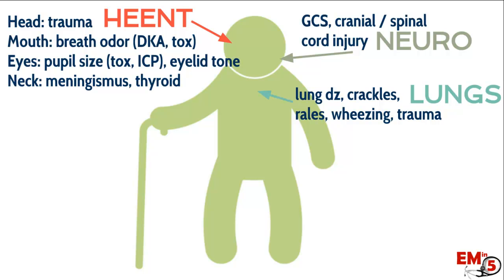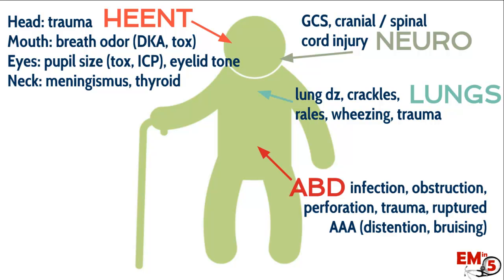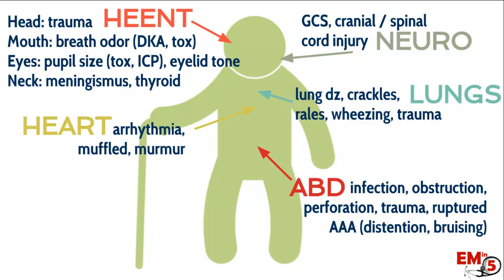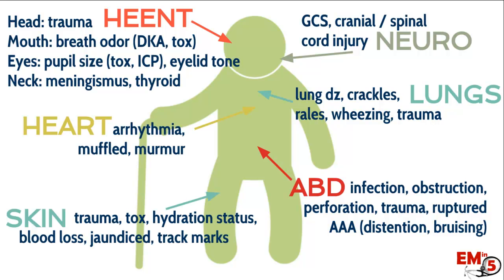The lungs can give good clues into past medical history — maybe they have crackles, wheezing, or a barrel chest of emphysema. In the abdomen, look for signs of infection, obstruction, perforation, or trauma; distension and bruising could indicate a ruptured AAA. Check the heart for signs of arrhythmia. The skin exam is also very helpful: look for trauma, signs of a toxidrome, hydration status, shock, temperature, blood loss, and past medical history clues like jaundice or edema. You can also get social history — maybe they have track marks.